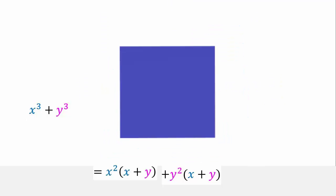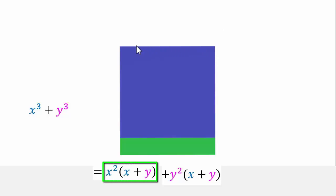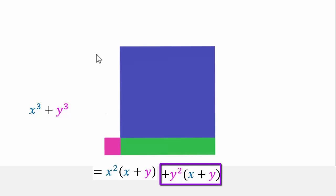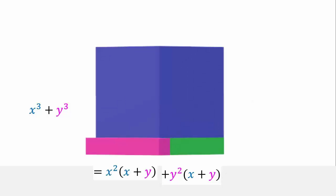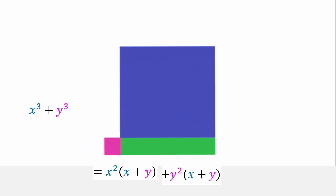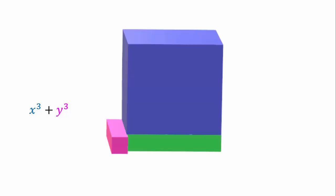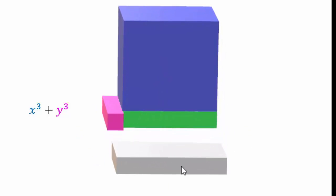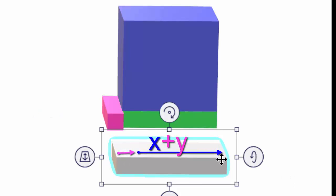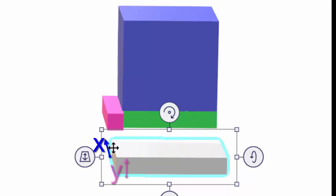Let's review: we have our cube, then we build up the green portion under it, making a rectangular prism which is x by x times x plus y. Then we added a piece to the side — y times y is y squared — and we made its length x plus y. So we added x plus y times y squared. Now let's remove the piece we don't need so we're only left with x cubed plus y cubed. This piece we added: from here to here it's x plus y, from here to here it's x, and the height is y of this piece.